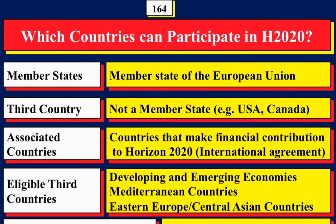When putting a consortium together, you normally need a minimum of three partners from the member states or associated countries. Third countries are divided into different categories, the main two being countries that can receive funding and countries that cannot receive funding.